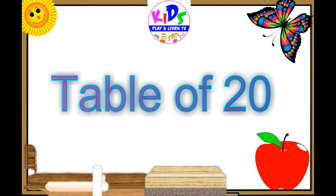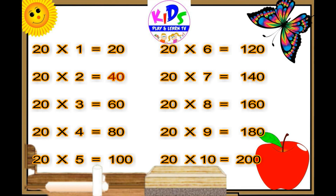Hello, let's learn the table of 20. 20 ones are 20, 20 ones are 20. 20 twos are 40, 20 twos are 40. 20 threes are 60, 20 threes are 60. 20 fours are 80, 20 fours are 80. 20 fives are 100, 20 fives are 100.